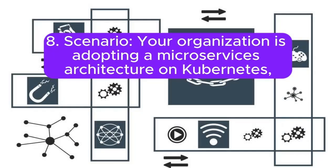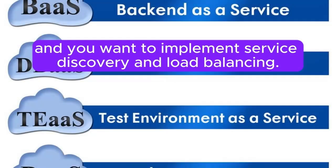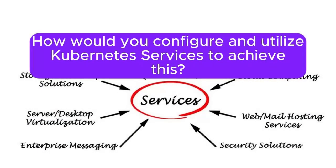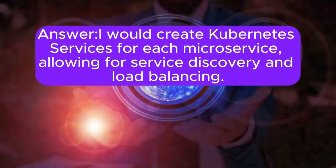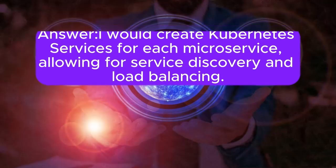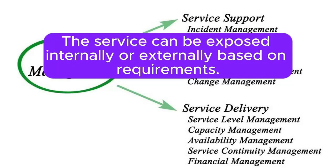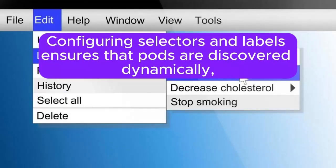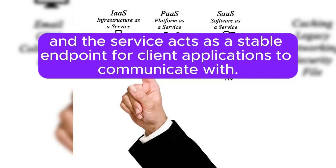Scenario 8: Your organization is adopting a microservices architecture on Kubernetes, and you want to implement service discovery and load balancing. How would you configure and utilize Kubernetes services to achieve this? Answer: I will create Kubernetes services for each microservice, allowing for service discovery and load balancing. The service can be exposed internally or externally based on requirements. Configuring selectors and labels ensures that pods are discovered dynamically, and the service acts as a stable endpoint for client applications to communicate with.